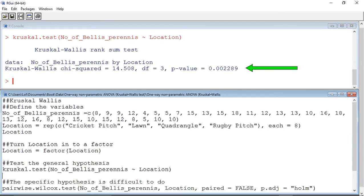So, a p-value of 0.002289 suggests we can reject the null hypothesis, and that there is a significant difference in the density of Bellis perennis between the four grass environments we looked at.